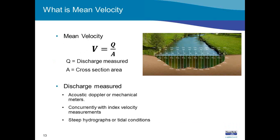Mean velocity is discharge divided by area, where discharge is measured using your M9, flow tracker, or current meter. Critically, the cross-sectional area used must be based on the stage-area rating — not the area calculated from the actual discharge measurement. This is very important because the entire index velocity rating is referenced to that cross-section, and using different areas will bias the calculations.